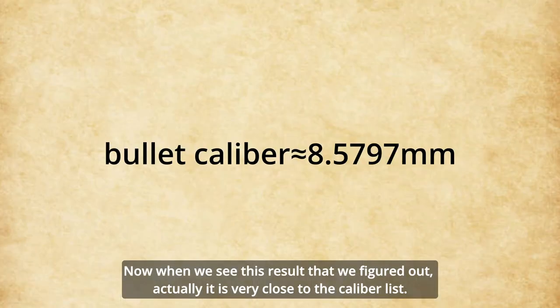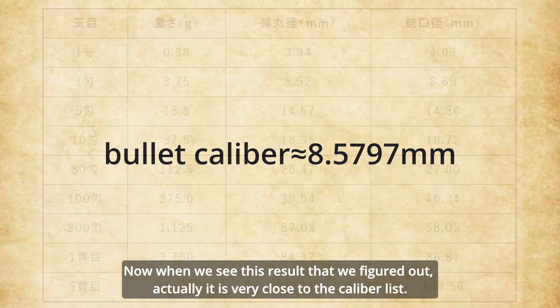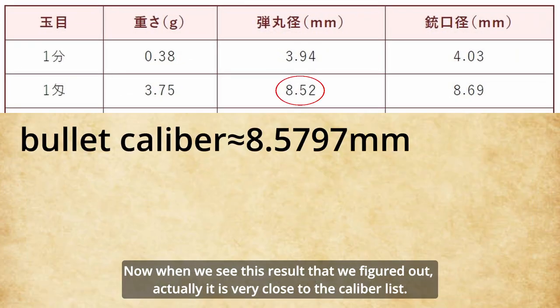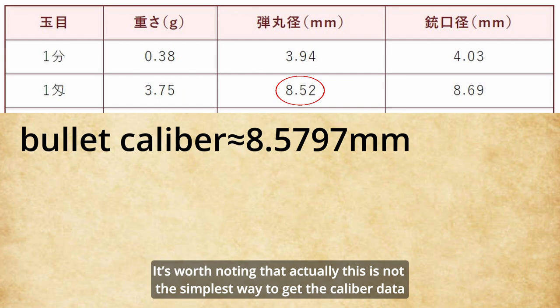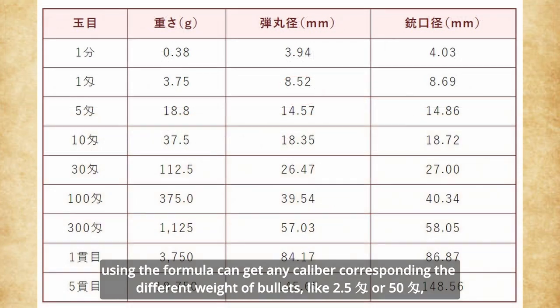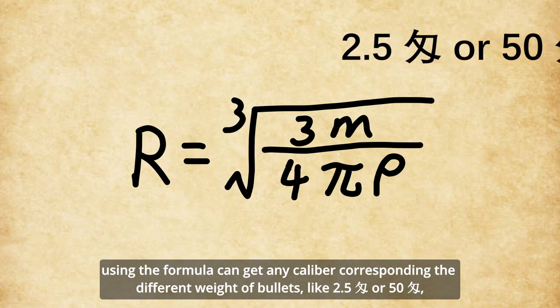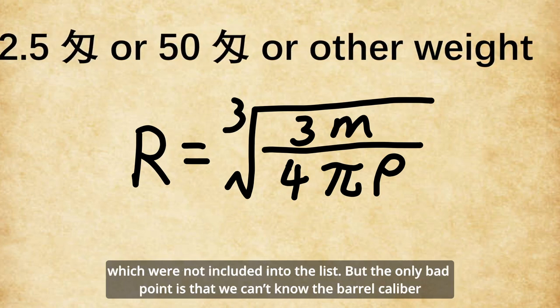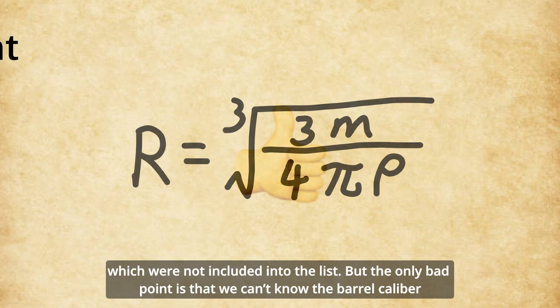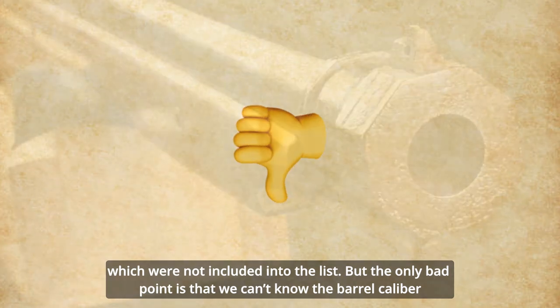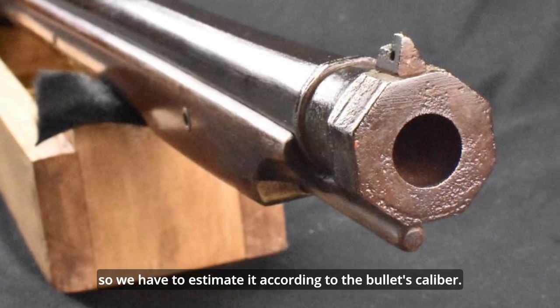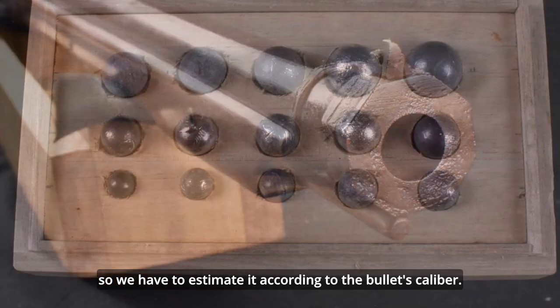Now let's look at the result we figured out — it is actually very close to the caliber list. It should be noted that this is not the simplest way to get caliber data. But compared with simply checking the caliber list, using the formula can yield any caliber corresponding to different bullet weights, like 2.5 monme or 50 monme, which were not included in the list. The only drawback is that we can't know the barrel caliber directly, so we have to estimate it from the bullet caliber.